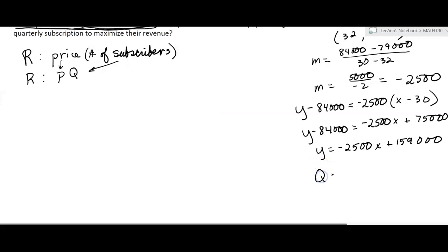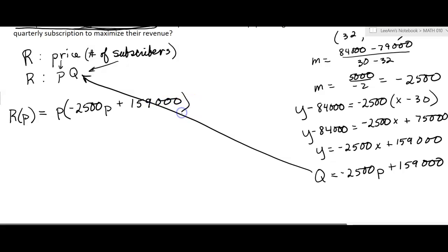Okay, so that means I can substitute that in for the Q here. So my revenue based on the price is going to equal P times negative 2,500P plus 159,000. And that's going to be negative 2,500P squared plus 159,000P.